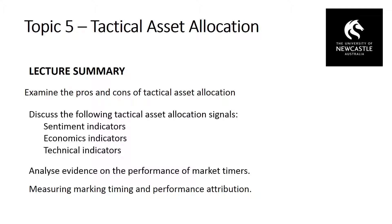The obvious litmus test for tactical asset allocation is whether people can make money out of it. The evidence on the performance of market timers unfortunately does not make for great reading. Over the past 30 years, market timing funds — funds that employ tactical asset allocation — actually tend to underperform the market on average. This indicates that while some of the signals discussed may be statistically able to predict future movements across asset classes, when we impose market frictions such as taxes and transaction costs, that statistical predictability is eroded and the transaction is not profitable. This also suggests that markets are reasonably efficient — sufficiently so that we're not able to easily predict directions of future market movements.